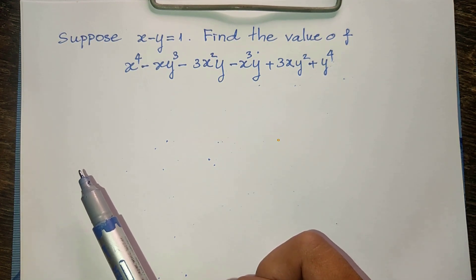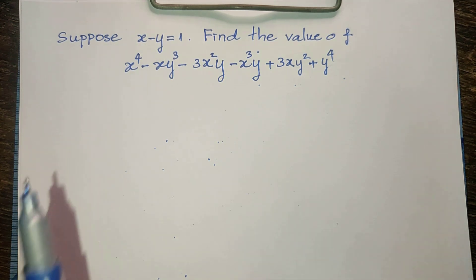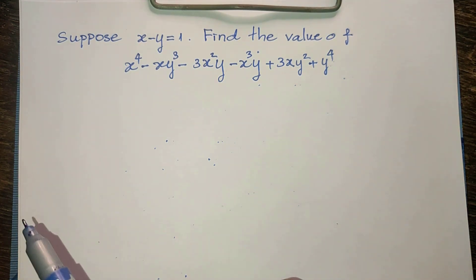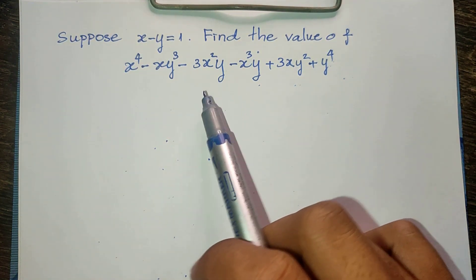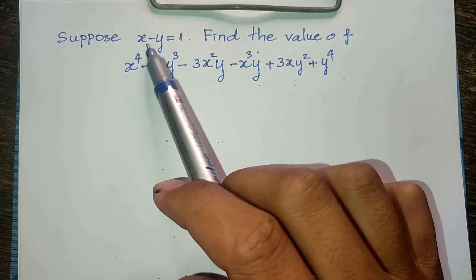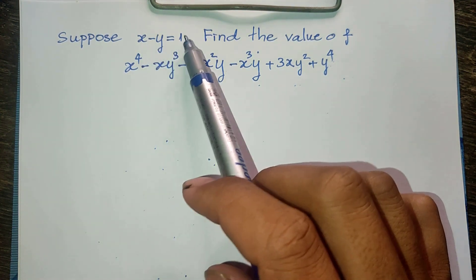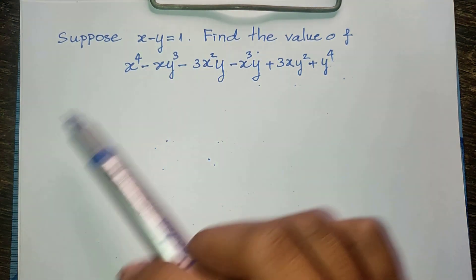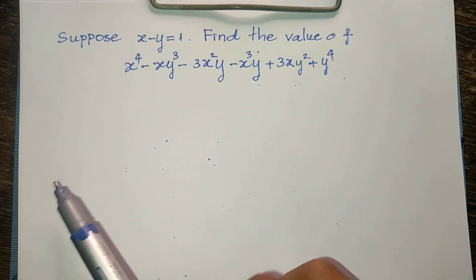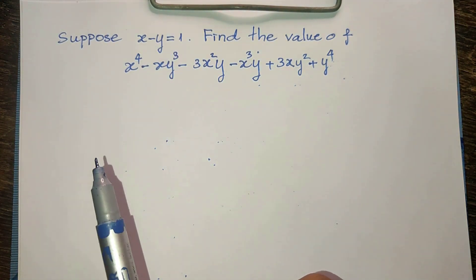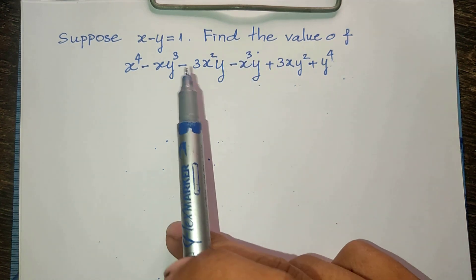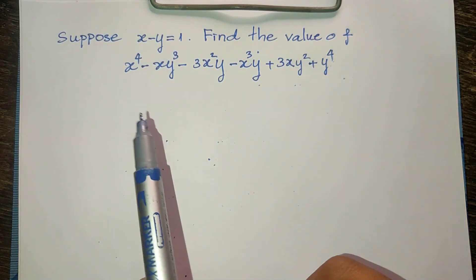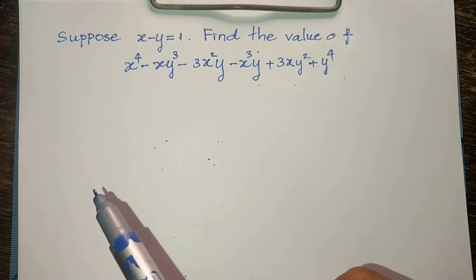Okay, now we go to the solution together. We have the equation x minus y is equal to 1, so we must rewrite our expression in terms of x minus y.